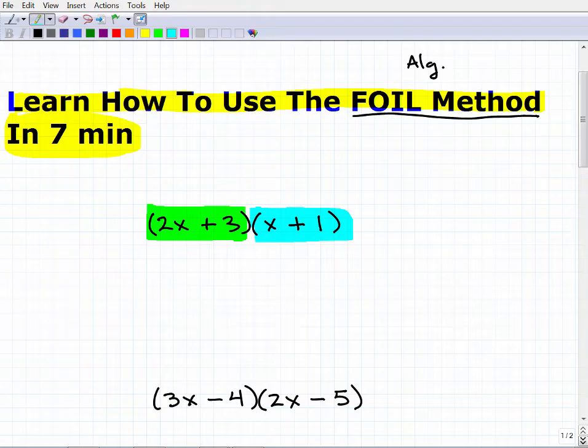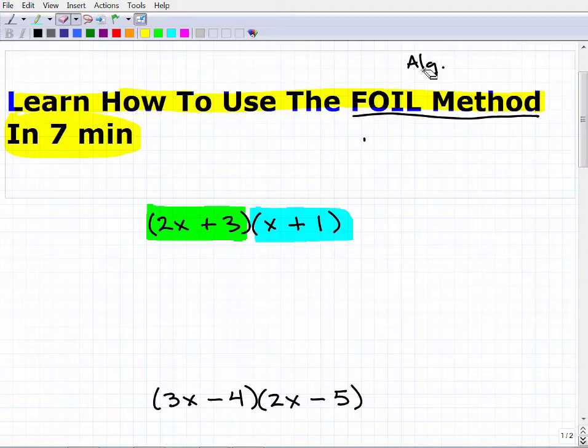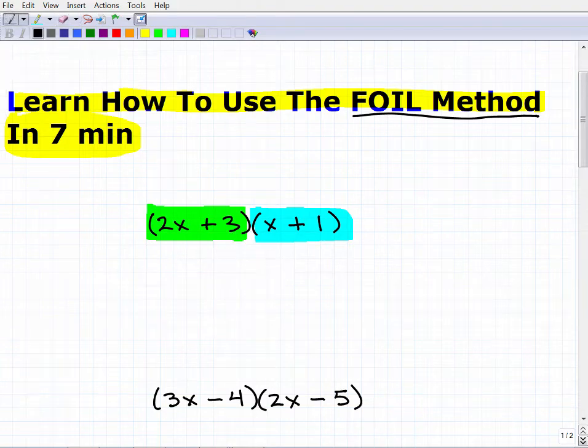Now these two polynomials here we happen to be multiplying. But we could take these polynomials, we can add them, we can subtract them, and we can multiply them. Then there is something we can do later on called dividing polynomials. That's a little bit different. But essentially what we can do is when we have two different polynomials, we can do various operations with them. In this situation here, we're going to be multiplying polynomials. So FOIL has to do with multiplication of polynomials, but not any kind of polynomial.